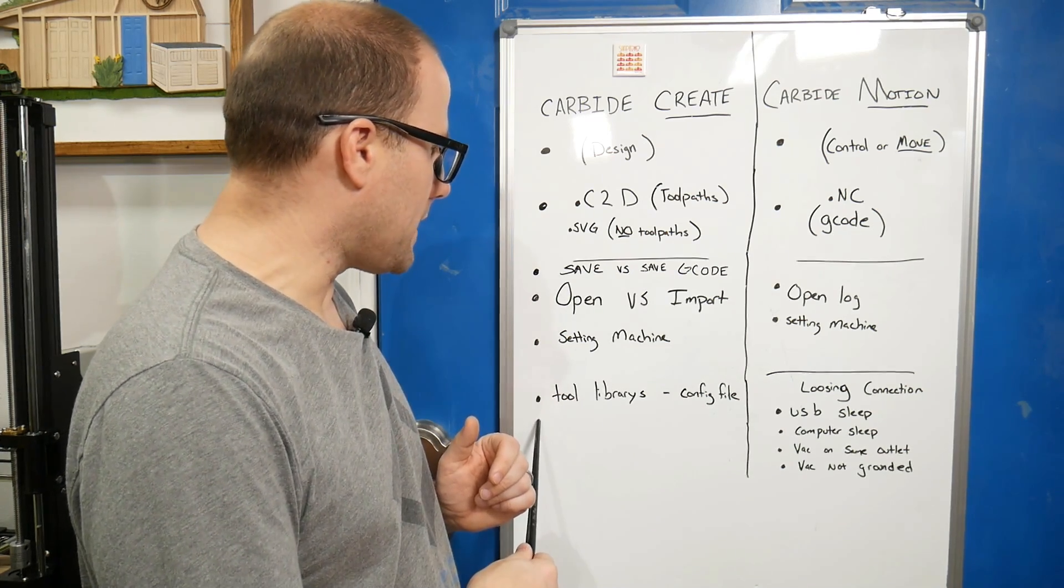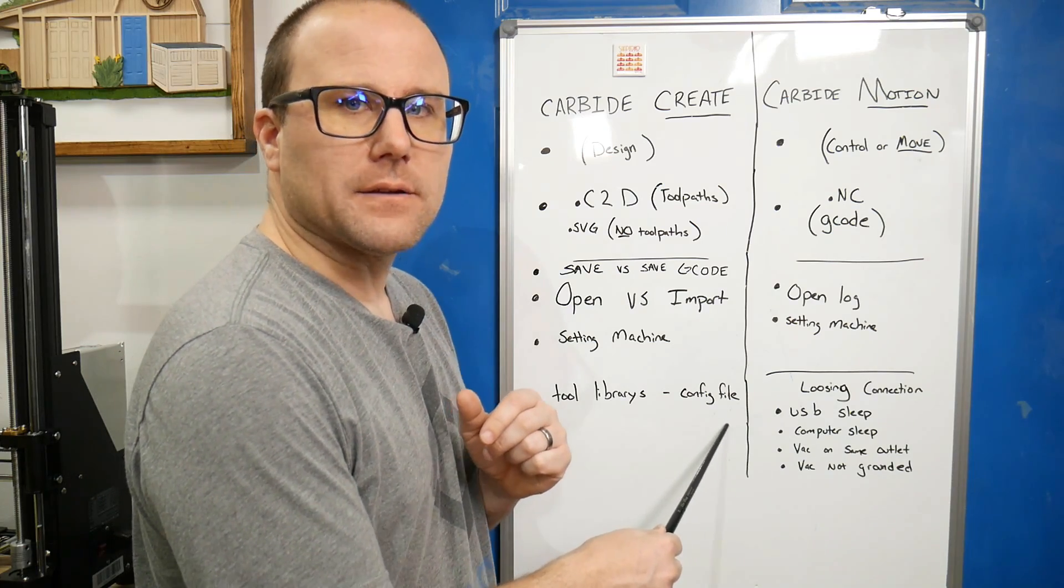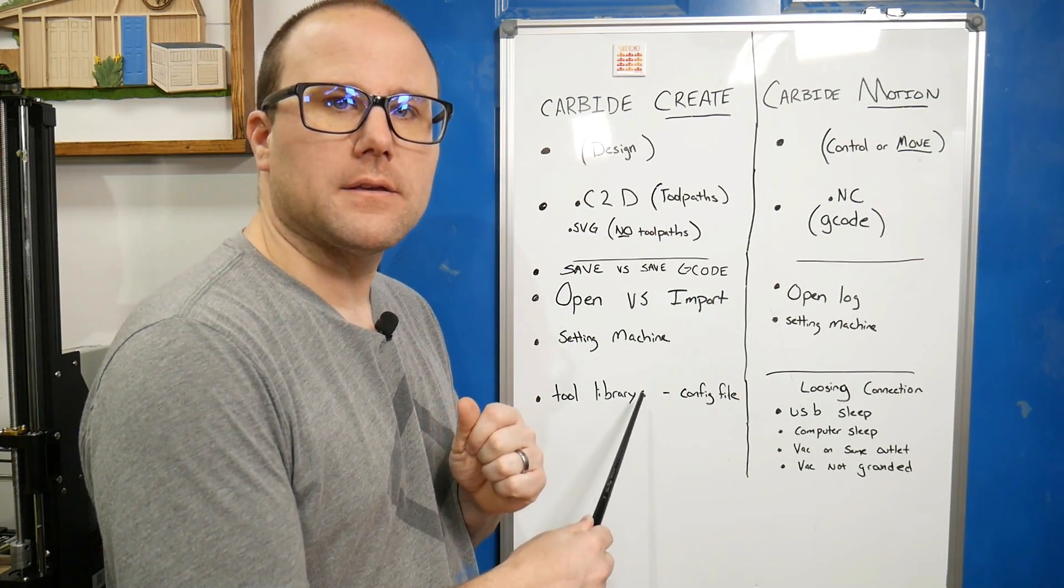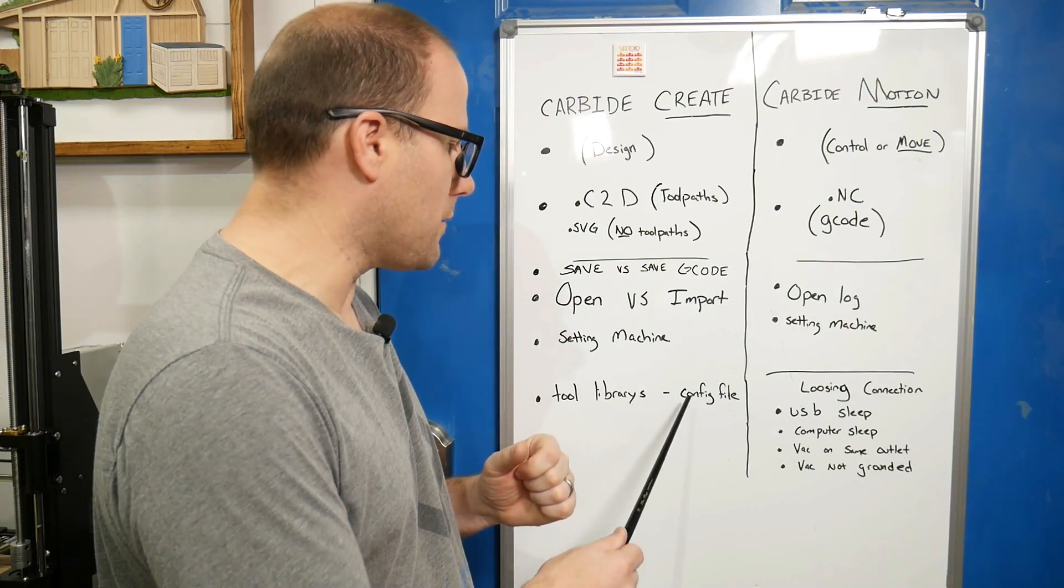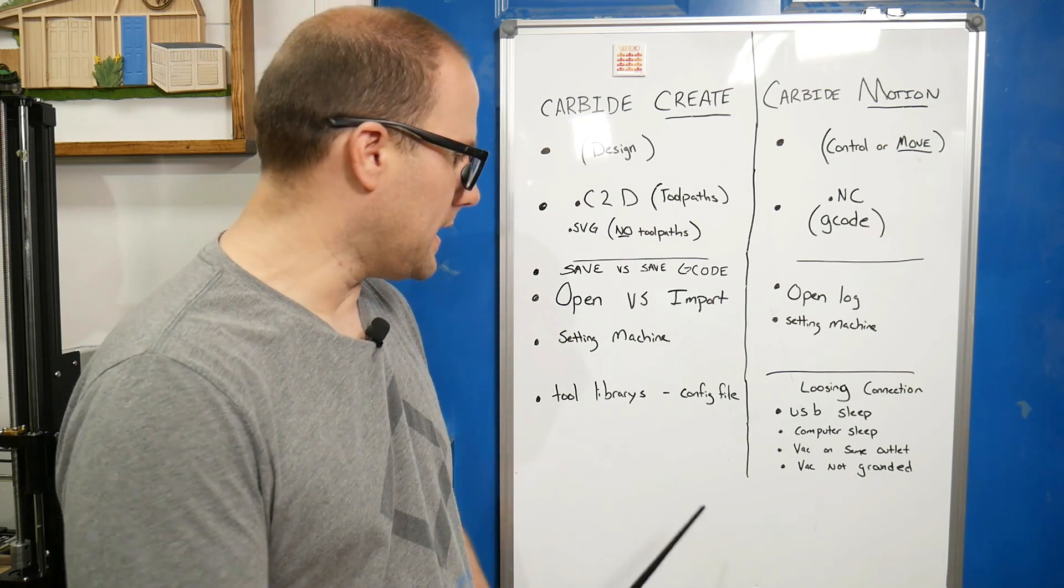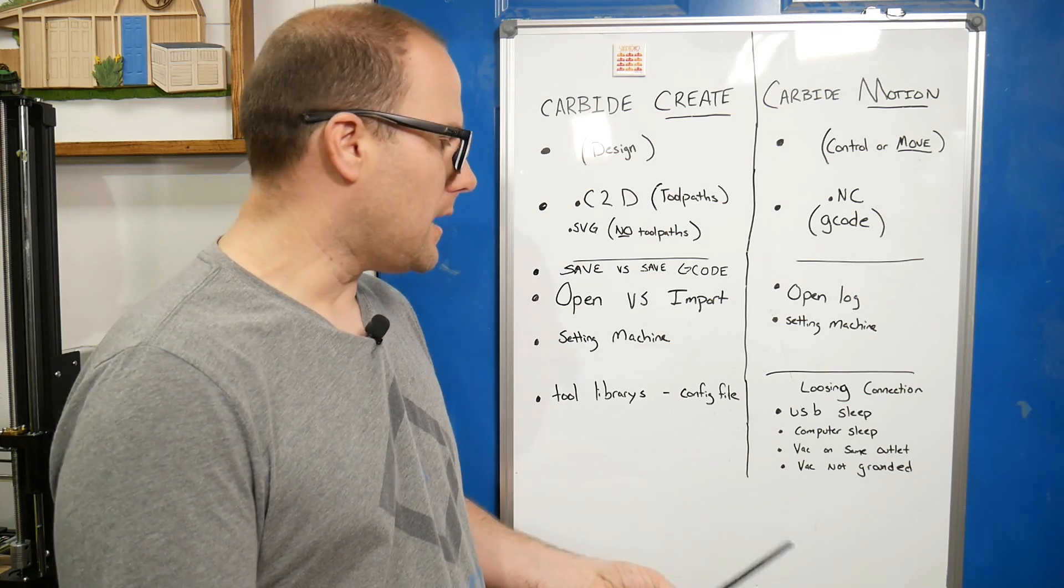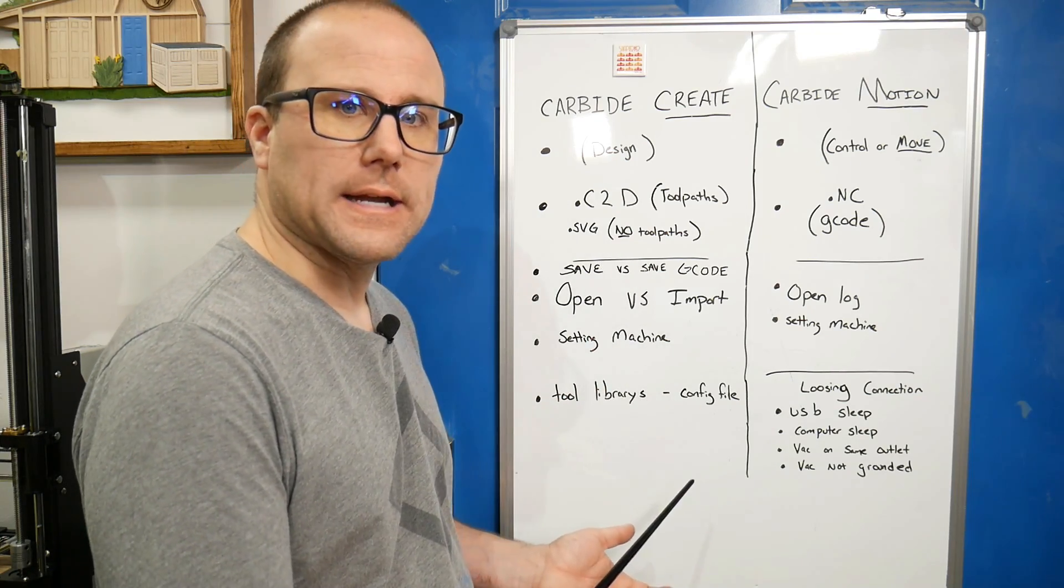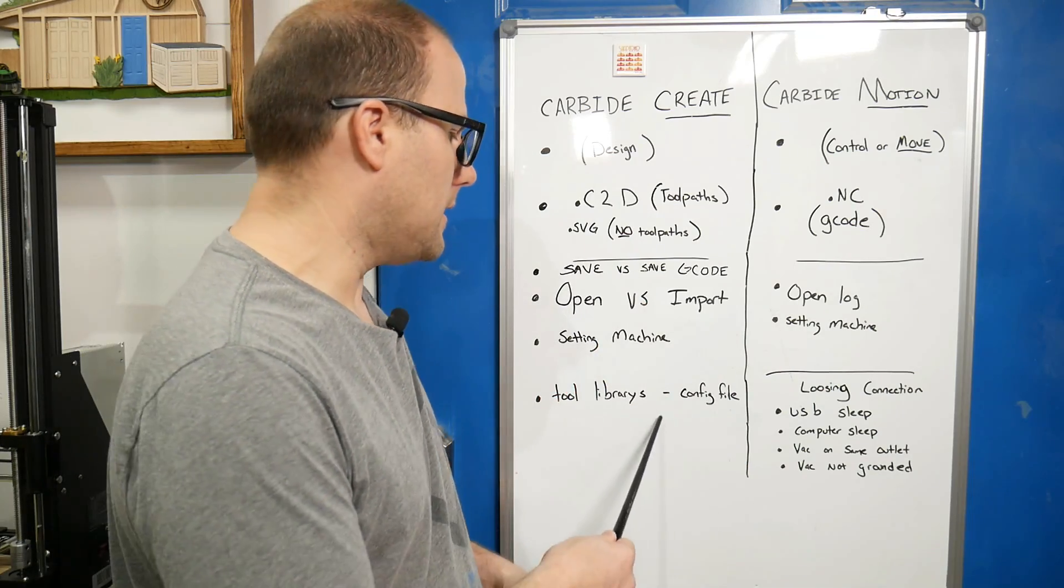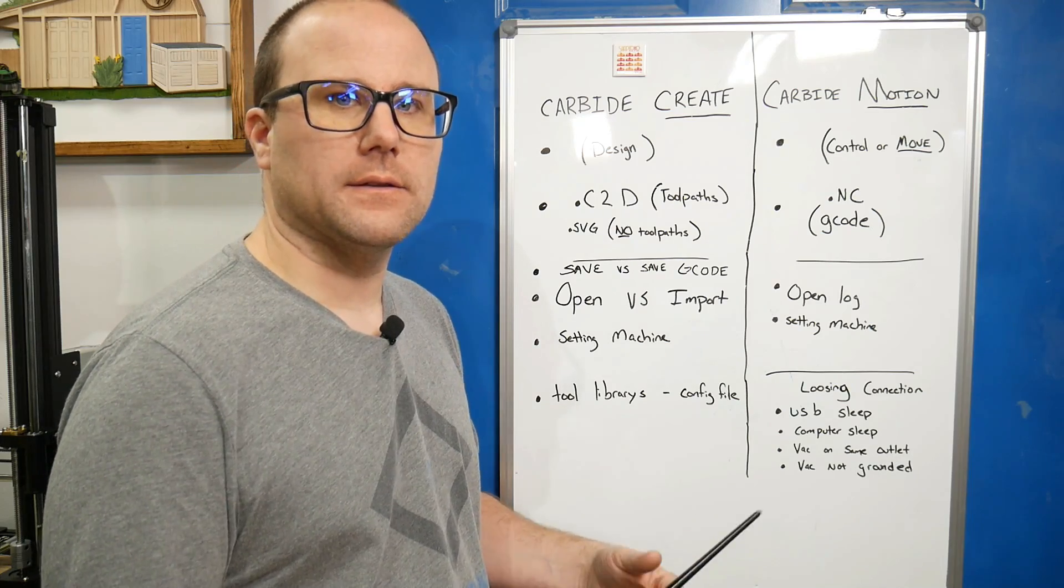At the bottom of Carbide Create, we have tool libraries in the config file in settings. If you make a nice tool library and want to put that on a different computer or your computer crashes, we can find the .ini file and save that somewhere. Once we load Carbide Create again, we can copy that over and it will bring in all of our tool libraries.